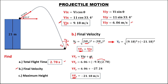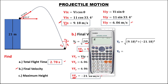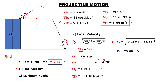Now solving for the final velocity: we have the square root of the final velocity for x (9.18) squared plus the final velocity for y (negative 21.18) squared — we can ignore the negative when squaring. The final velocity equals 23.08 meters per second.